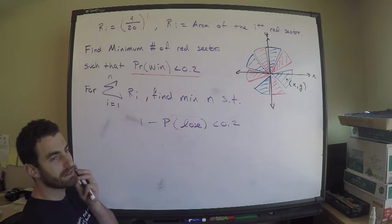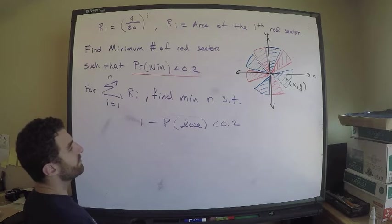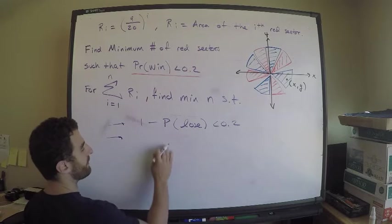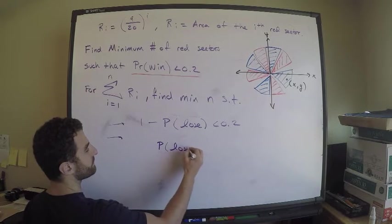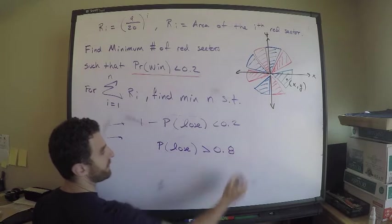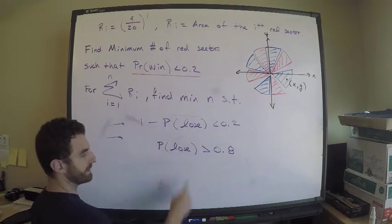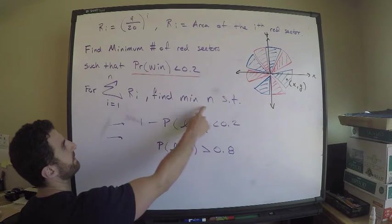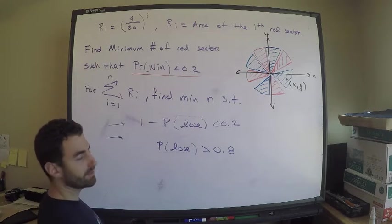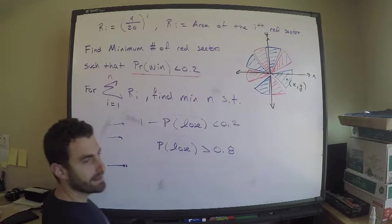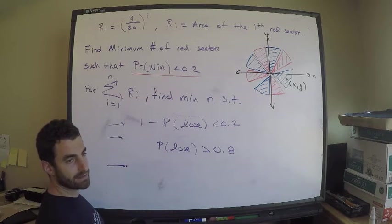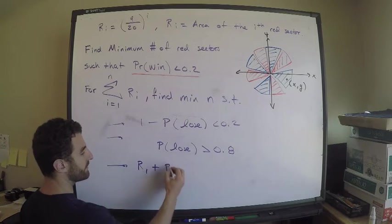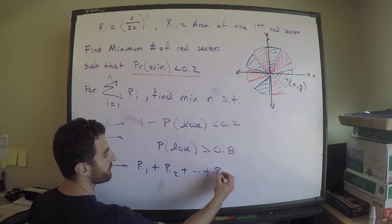If I lose, that means I get a red sector. This is equivalent to saying that the probability that I lose is greater than 0.8. I brought this over, brought that over. How do I lose? I either land in the first red sector, second, up to n.